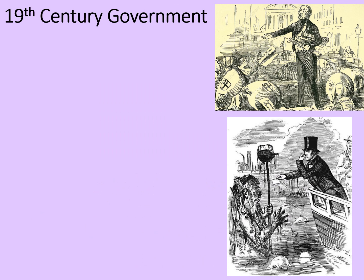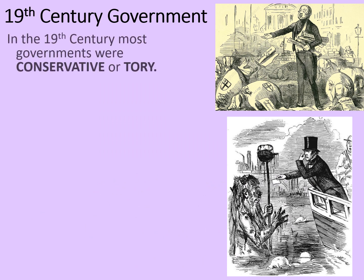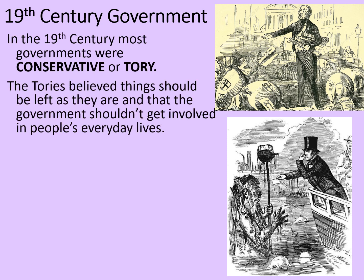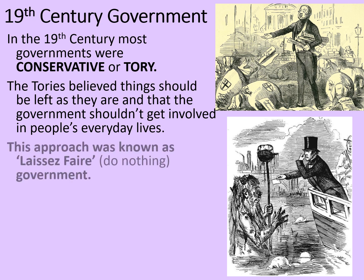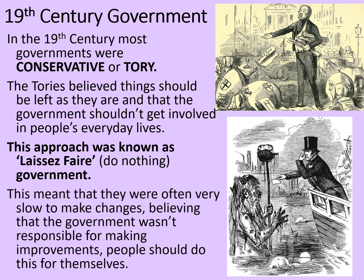Firstly we need to remind ourselves what 19th century government was like. In the 19th century most governments were conservative or Tory. The Tories believed that things should be left as they are and that the government shouldn't get involved in people's everyday lives. Now be aware that I'm talking about 19th century Tories here and not modern ones. This approach was known as laissez-faire or do nothing government. This meant that they were often very slow to make changes, believing that the government wasn't responsible for making improvements and that people should do this for themselves. As a consequence many of the reforms that happened during the 19th century were very gradual and very cautious — some people saw this as sensible, others saw it as a frustration of issues that needed to be dealt with quickly.